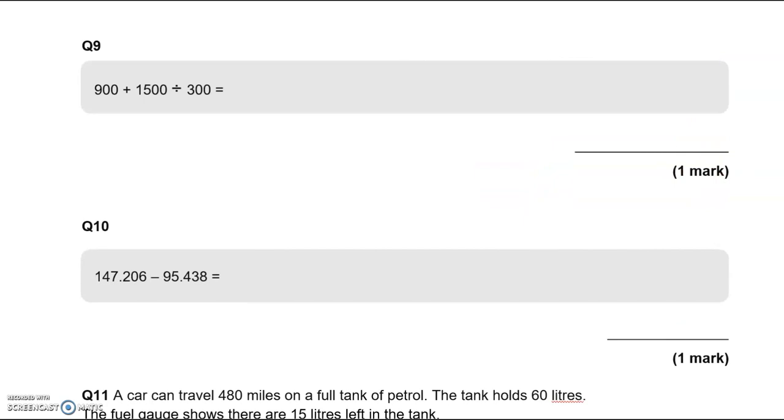Question number 9: 900 add 1500 divided by 300 equals what? Again, we've got two operations and we need to bear in mind the order of operations, BIDMAS or BODMAS. This tells us that we need to do division before addition. So 1,500 divided by 300 equals 5, because 5 lots of 300 fit into 1,500. Then we're going to do the addition. So 900 add 5, this is 905.